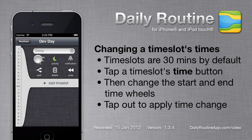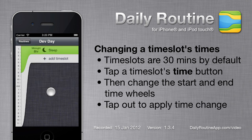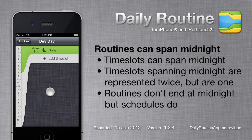Notice the timeslot's Time button text has changed, but the timeslot itself has only changed when I tap out of the timeslot. Routines in Daily Routine don't start or end — only the timeslots within them.